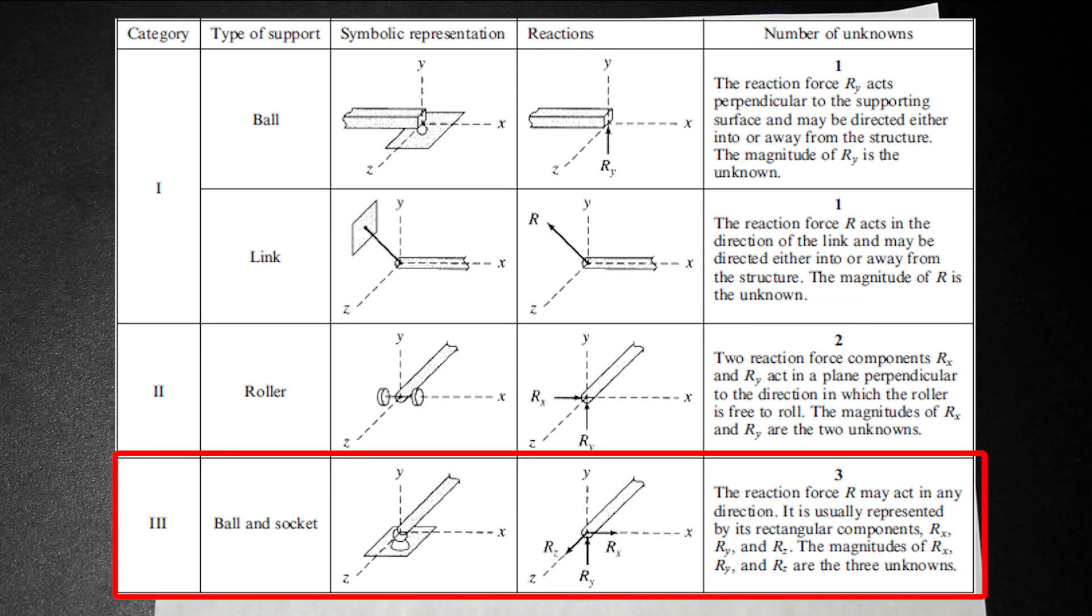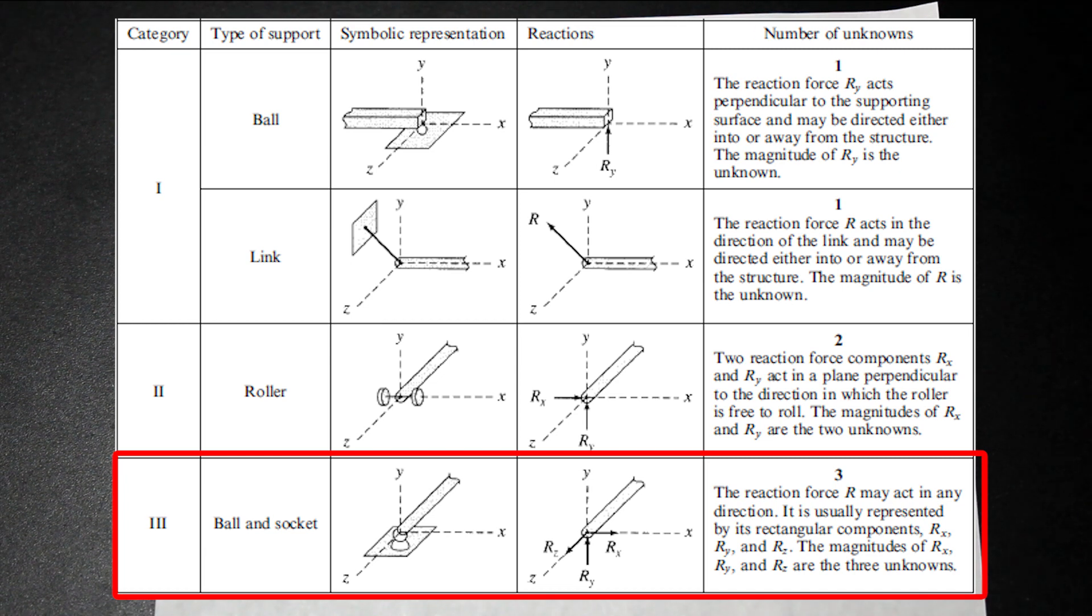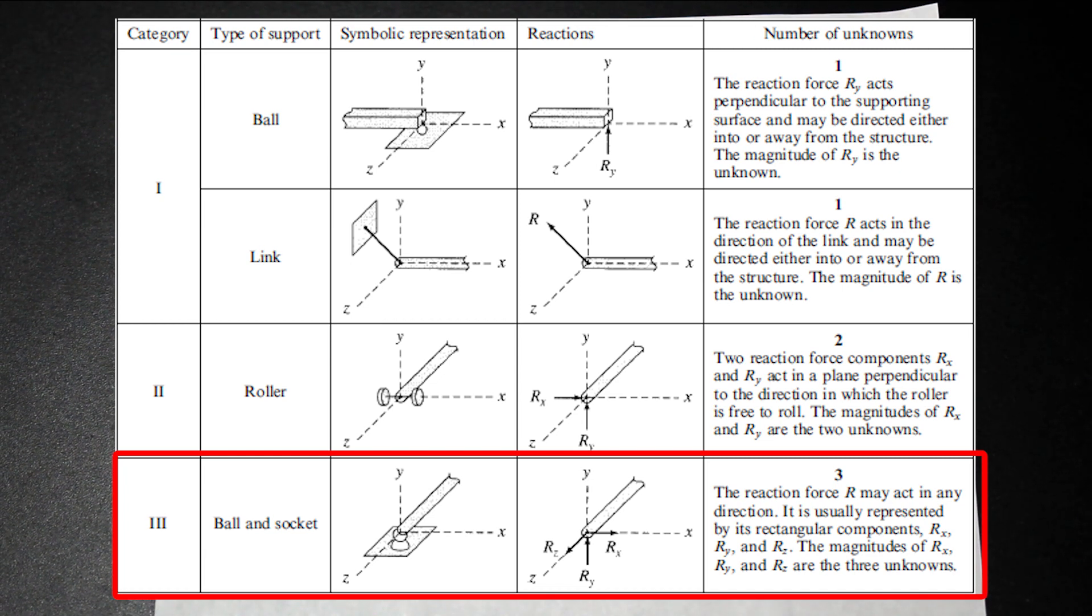For a category three, we have ball and socket, as you'll see here. And for a ball and socket, which is actually what we have in our example problem, the member is restrained in all three directions for Z, Y, and X. And for all of these here, as you can see, there's no moment reaction, so they're not fixed in any direction.